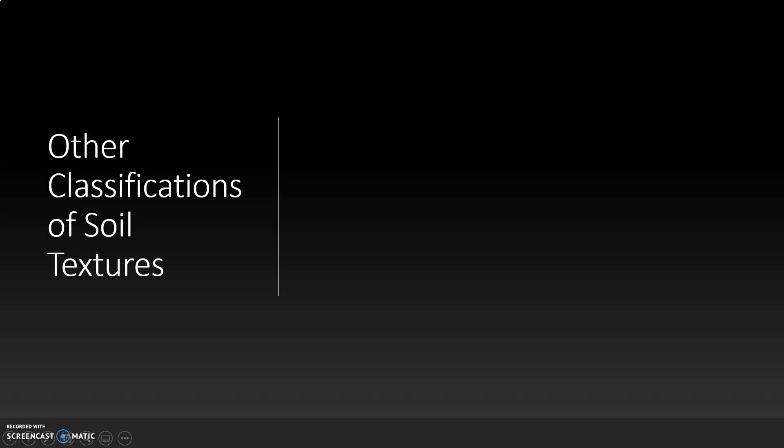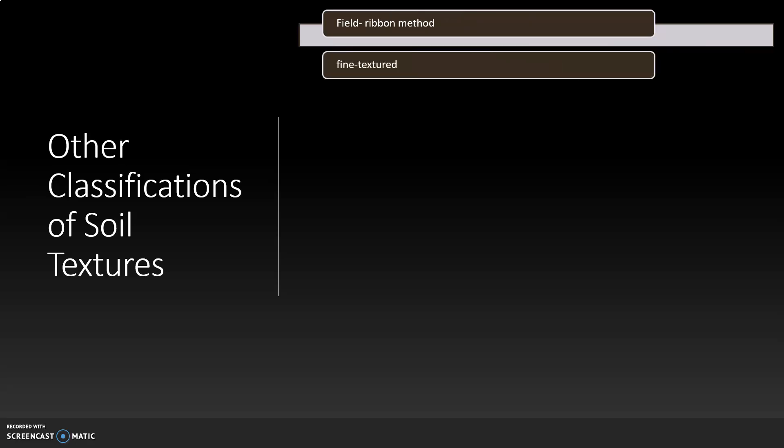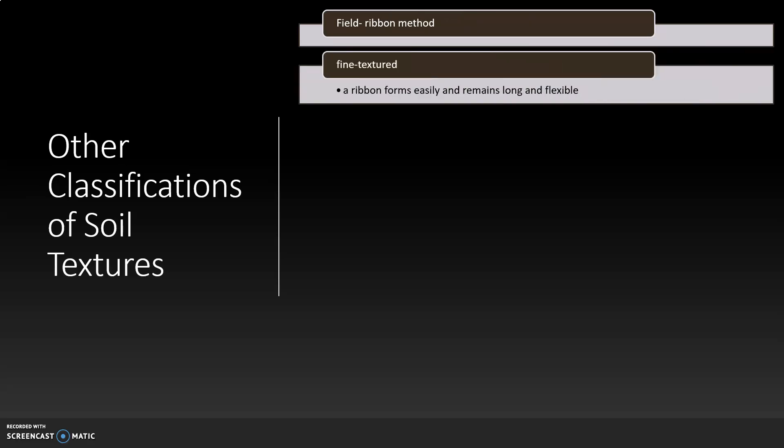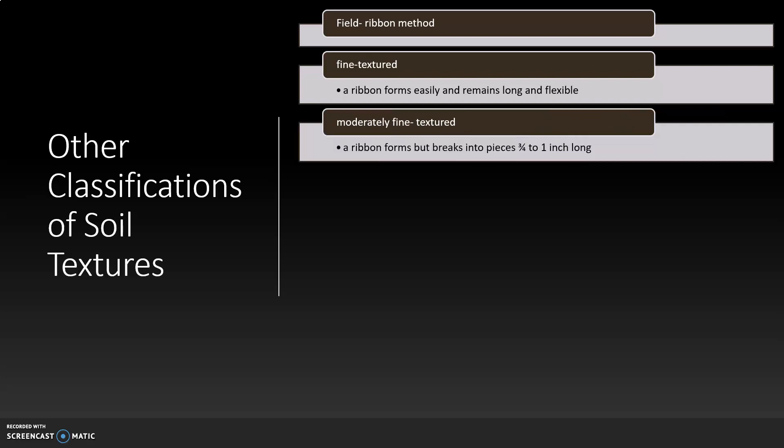Soil textures can be classified in other ways. Using the field ribbon method, there are five textures. Fine textured soils form a ribbon easily. The ribbon remains long and flexible. Moderately fine textured soils form a ribbon, but it breaks into pieces that are three quarters to one inch long.